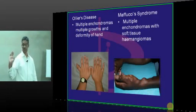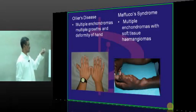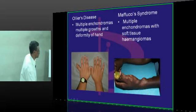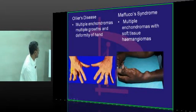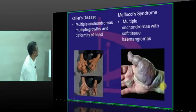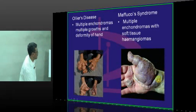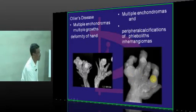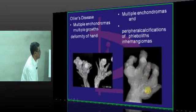To summarize: Ollier's disease means multiple enchondromatosis with multiple growths and deformities of bone, whereas Maffucci's syndrome means multiple enchondroma with soft tissue hemangiomas. On X-ray, typical hemangiomas show phleboliths - that is, calcified stone structures within the veins themselves - showing peripheral calcification of phleboliths in hemangiomas.